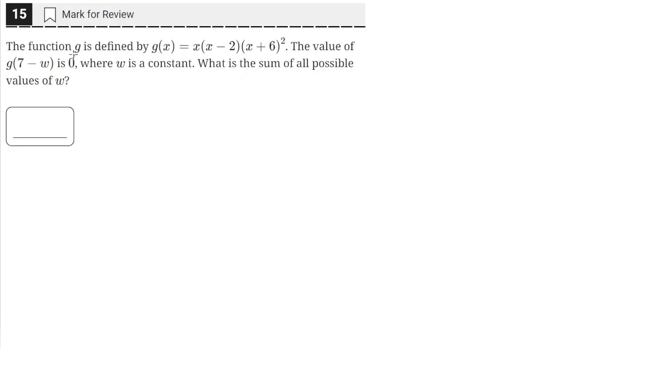The function g is defined by g of x equals this expression. The value of g of 7 minus w is 0, where w is a constant. What is the sum of all possible values of w?